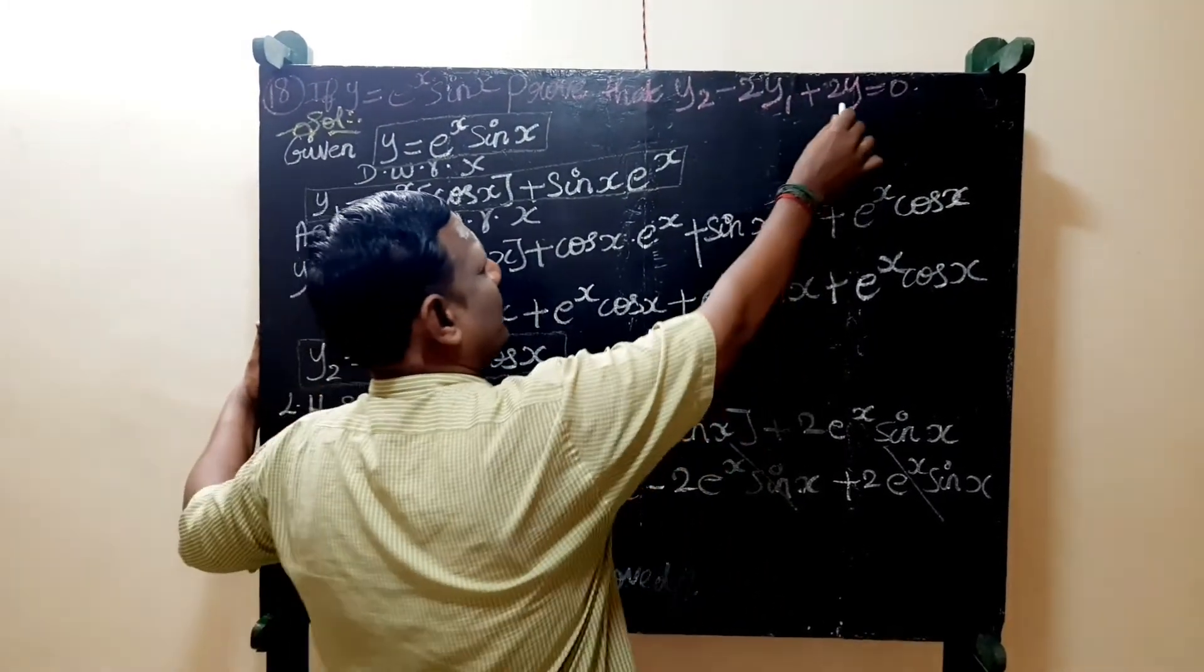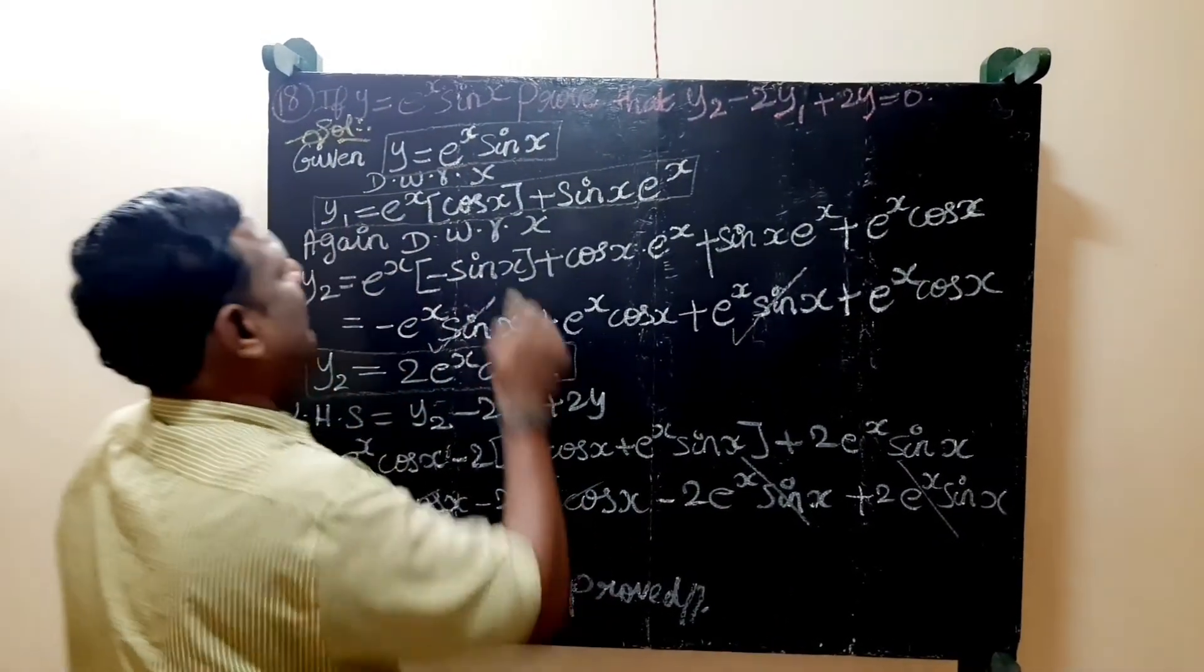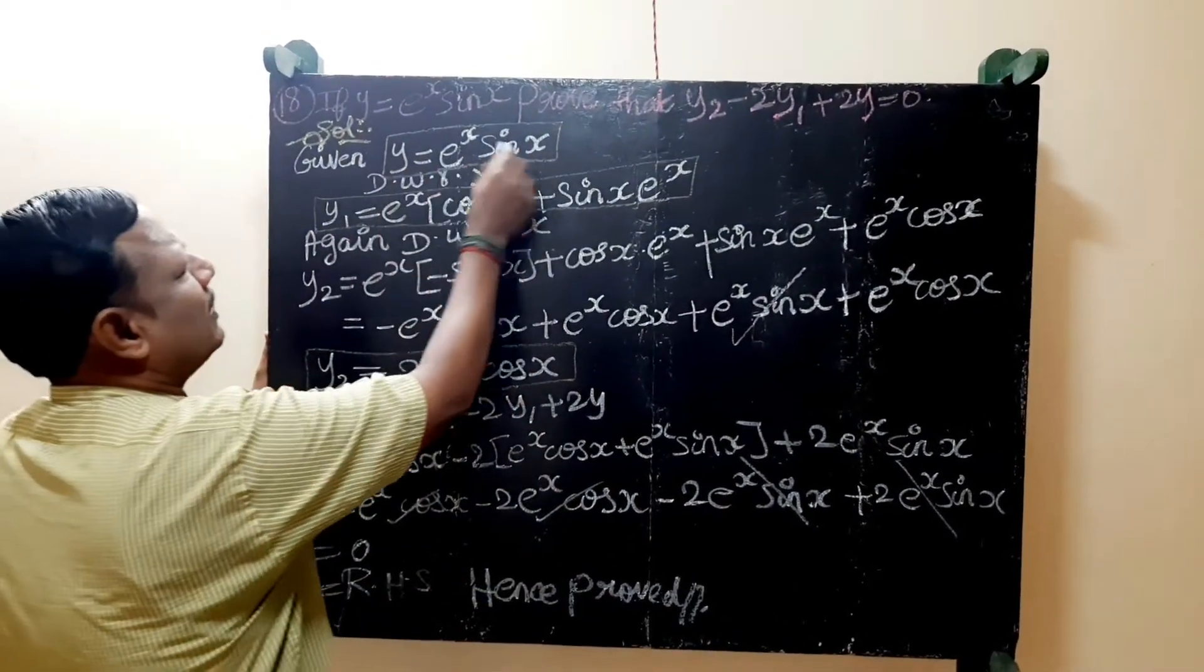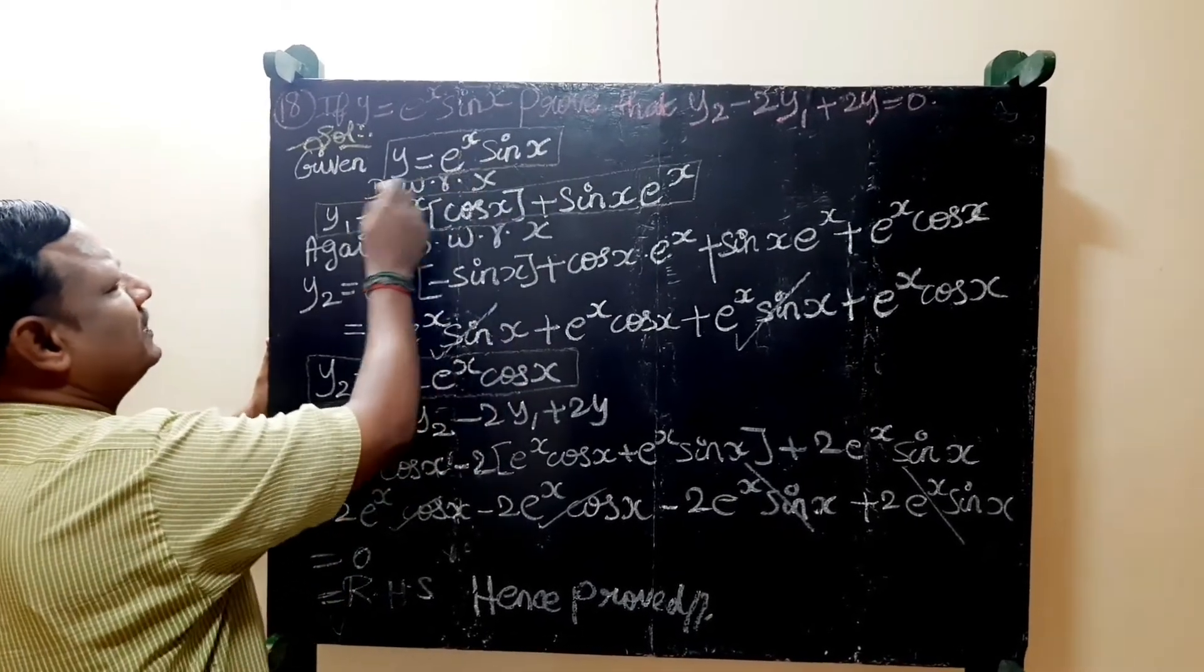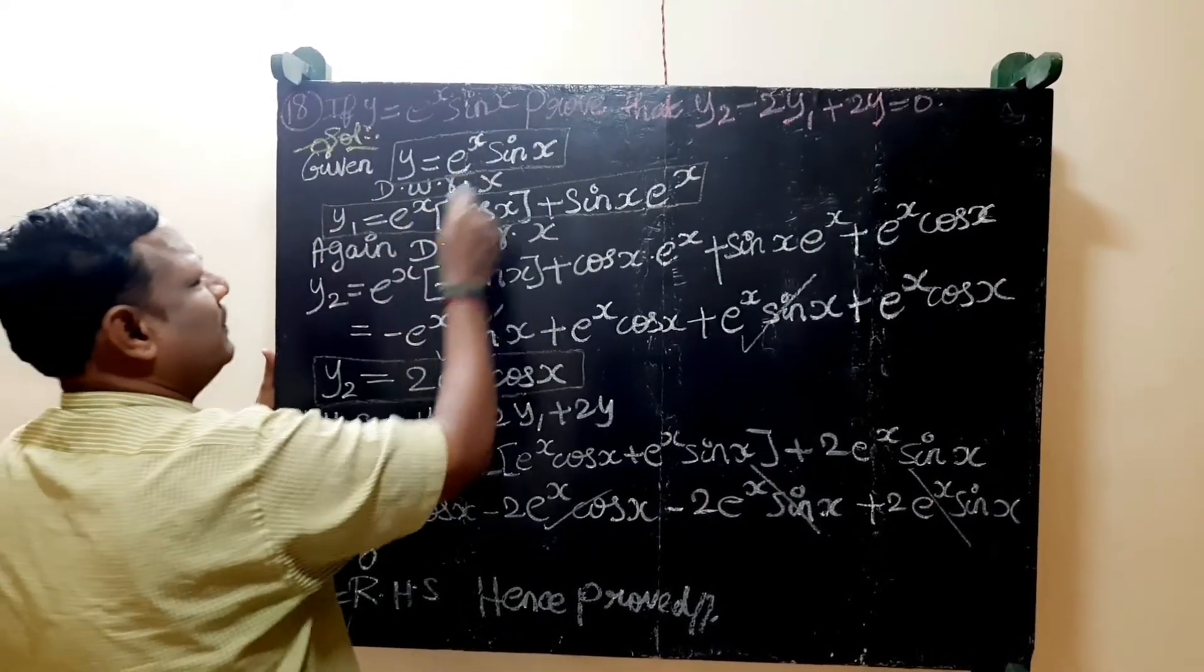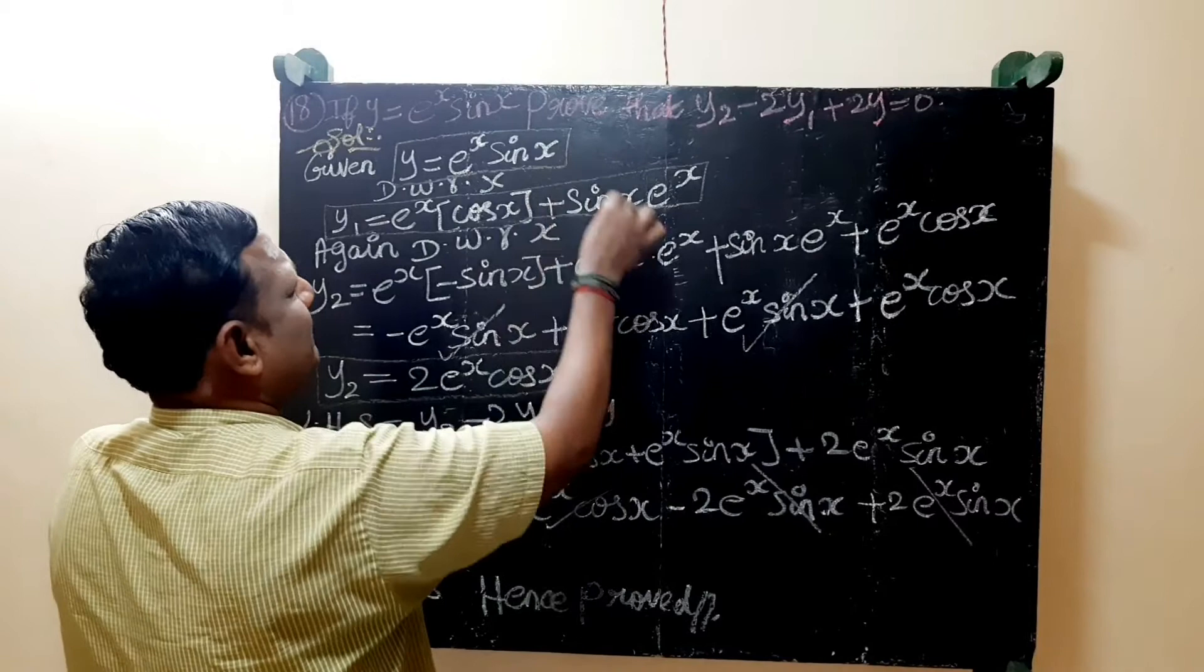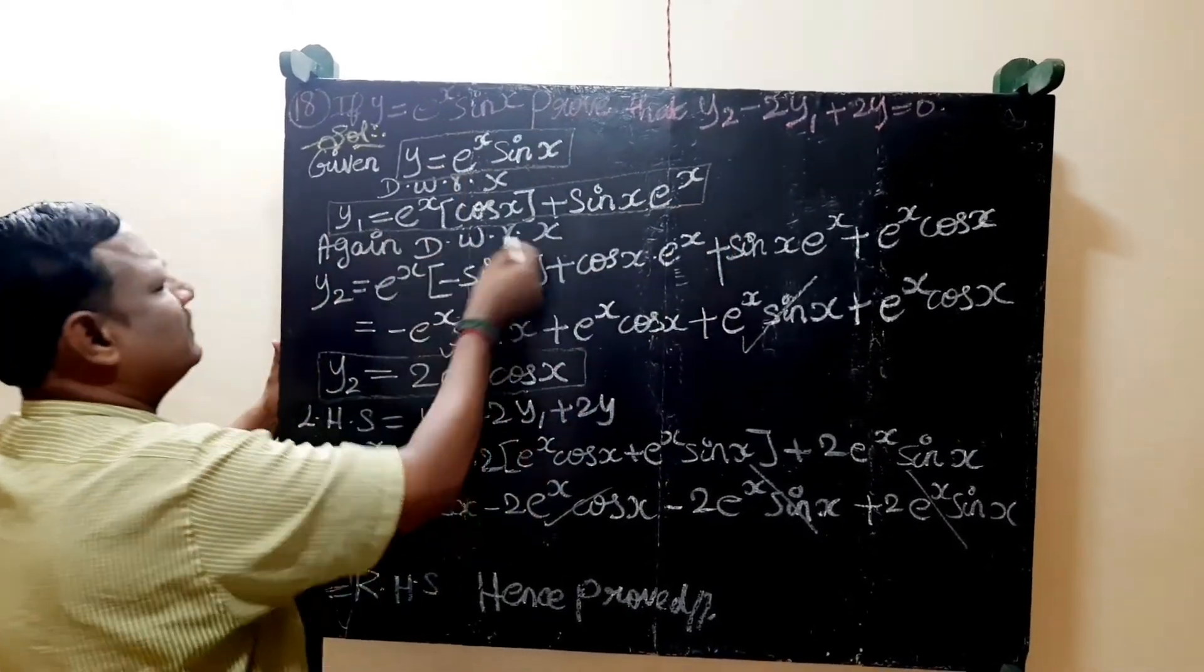If y is equal to y, then y1 is equal to y2. That's how we can do this method. So we can use y equal to u into v method. It is cos x and sin x is equal to e power x. So again differentiate with respect to x.